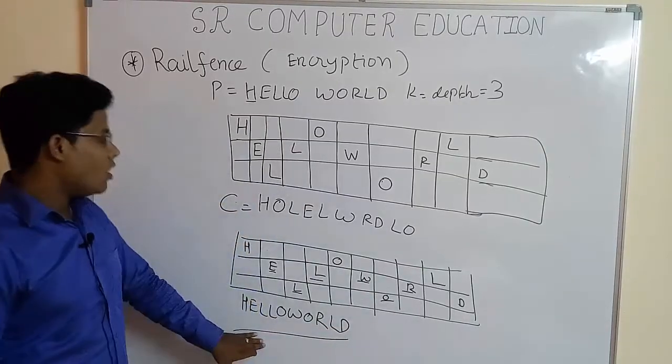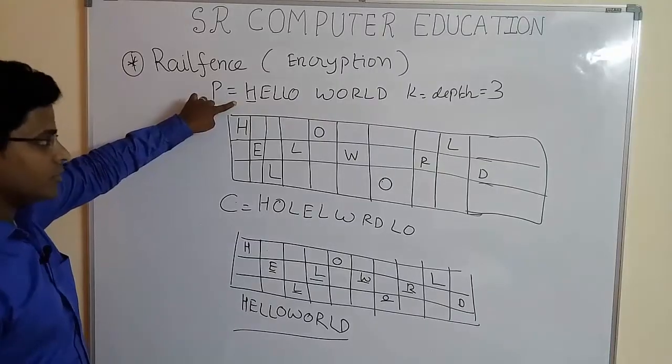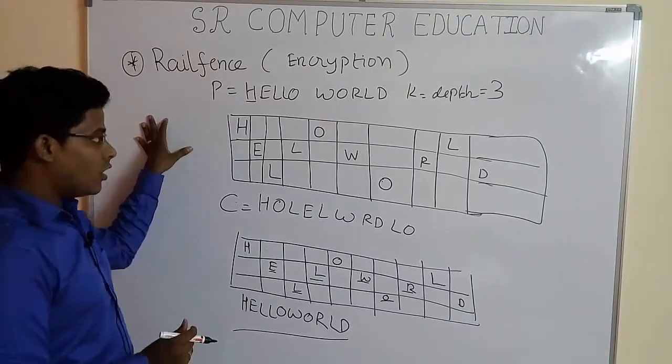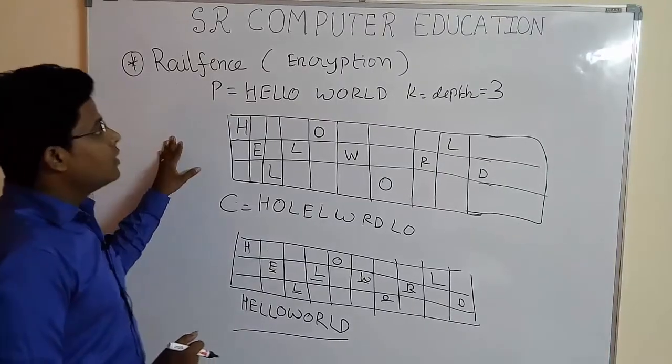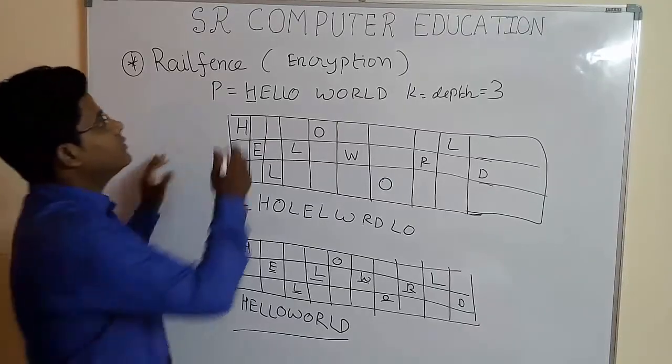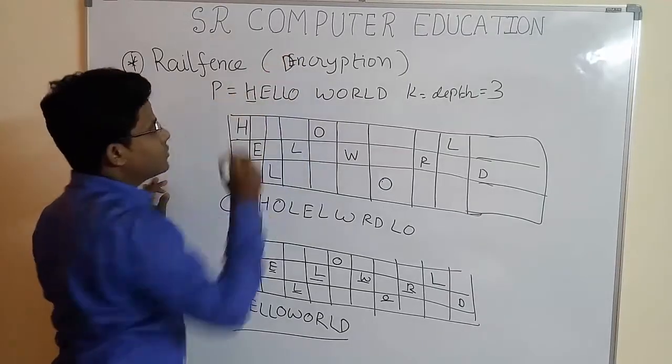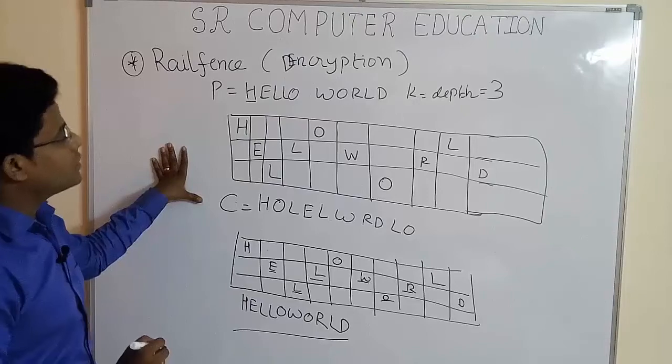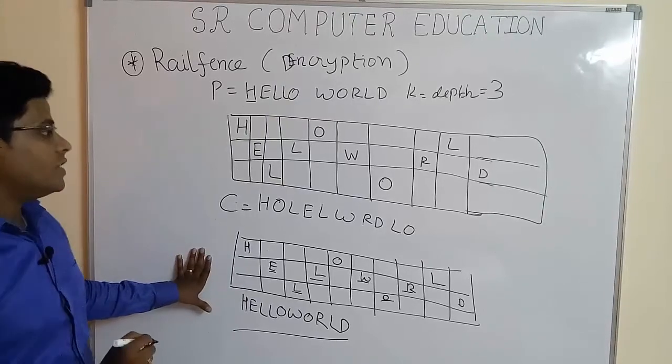So here we got the plain text hello word. So this is how you solve decryption part. This was decryption using rail fence technique.